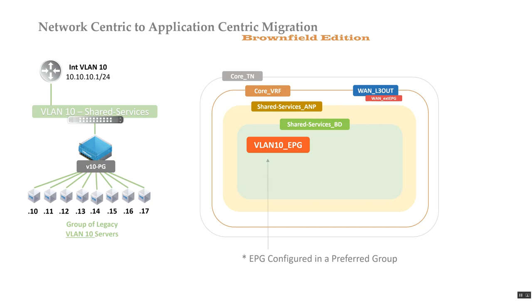As part of my network-centric migration, I configure all EPGs as part of the preferred group. The preferred group is like the elite class — think of standing at the airport in the business or first class boarding group. You're part of the elite class and everybody in that group gets the same treatment; they all board the plane at the same time. In ACI, all endpoints that are part of the preferred group can communicate with each other.